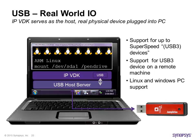We are referring to real-world I/O when the VDK serves as the host which is connecting to a real physical device plugged into the PC. For example, we are running our embedded ARM Linux on the VDK and from that Linux we are able to mount a USB stick, a pen drive, which is connected into the laptop or PC on which we are running the VDK.